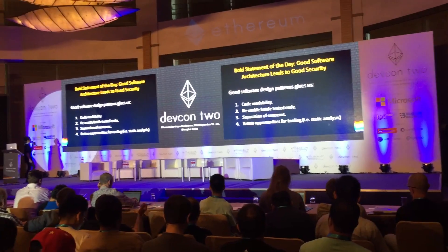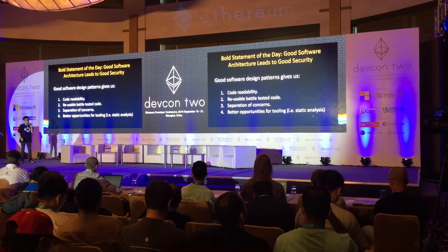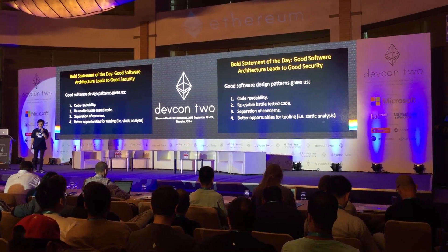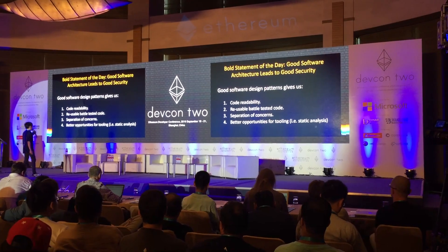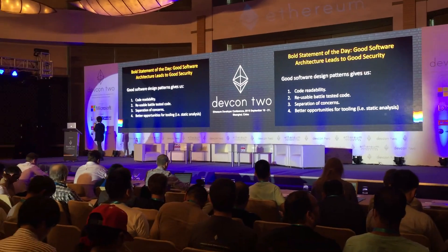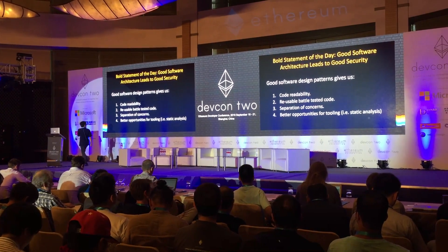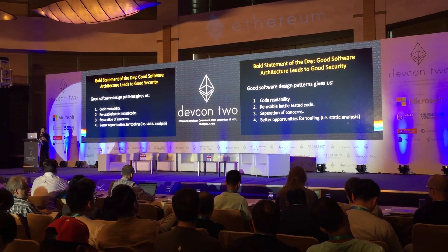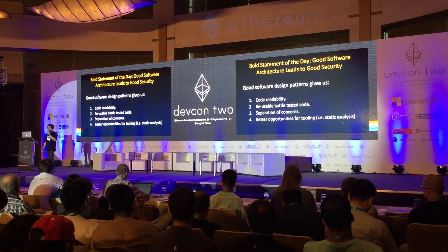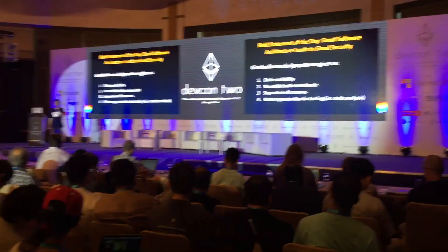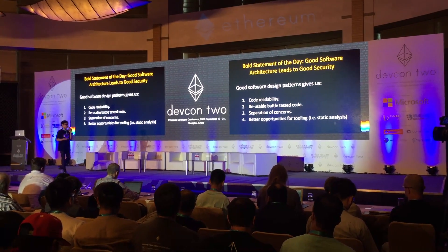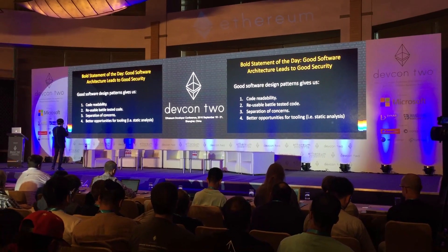The third point is separation of concerns. You separate your contracts into small pieces that can be easily audited, and you define the entry points and exit points to your contracts. Number four: good architecture will allow us to write better tools such as static analysis tools and generators to help create boilerplate code to implement this approach.